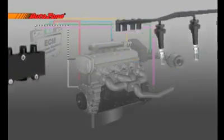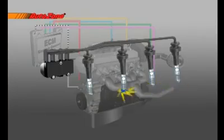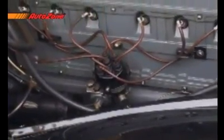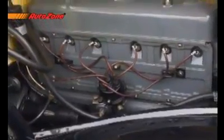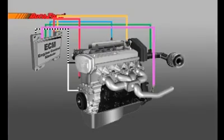Next are the ignition coils. The computer fires the ignition coil for each cylinder with precise timing. As engine operating conditions vary, the coil might need to be fired slightly sooner or later. In the old days, advancing the ignition timing was done via mechanical or vacuum controls — the vacuum advance system used on older cars. But today, this timing adjustment is performed electronically by the computer.